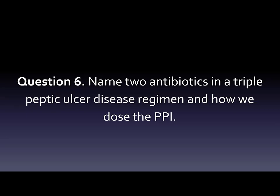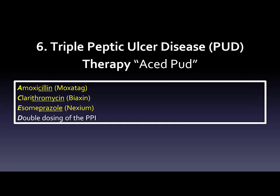Question number six: Name three antibiotics in a triple peptic ulcer disease regimen and how we dose the PPI. Triple peptic ulcer disease therapy — we'll use the mnemonic ACE PUD.